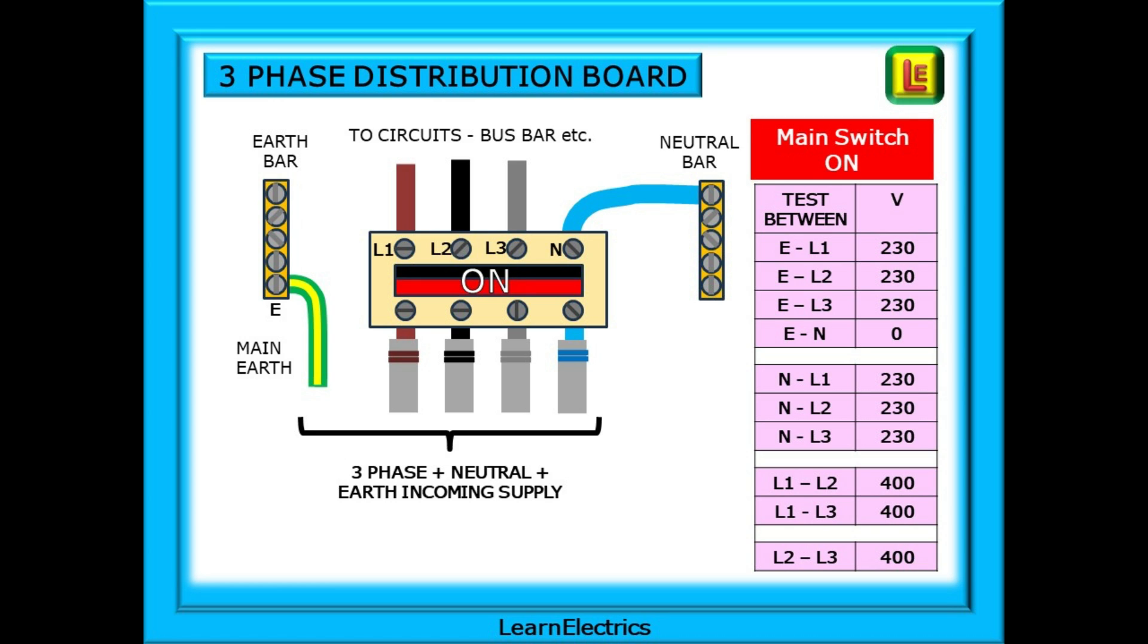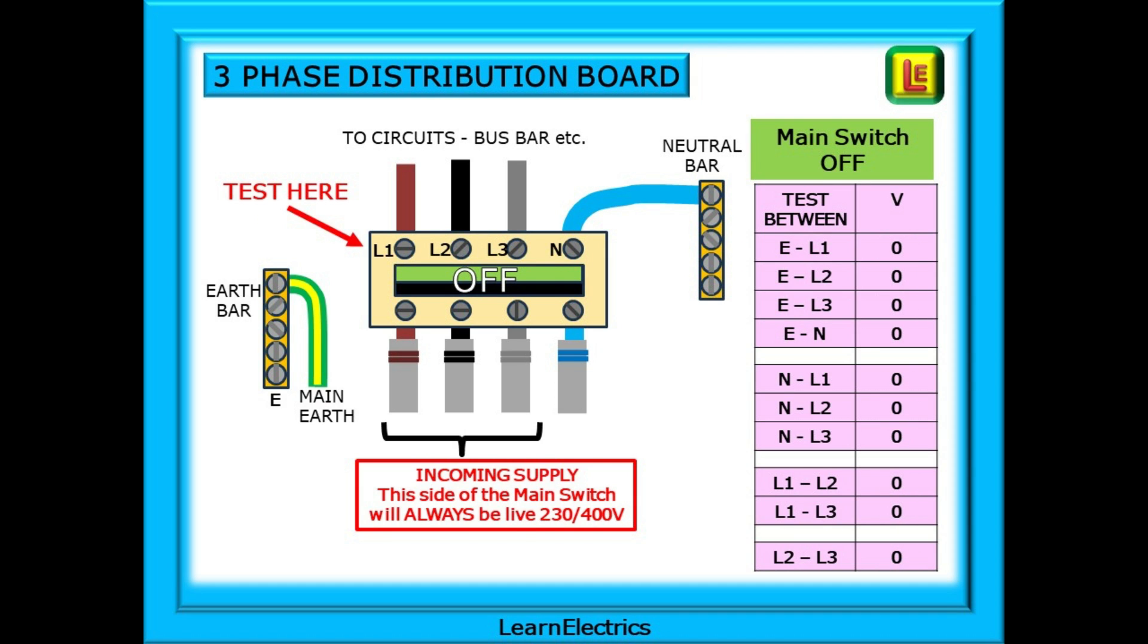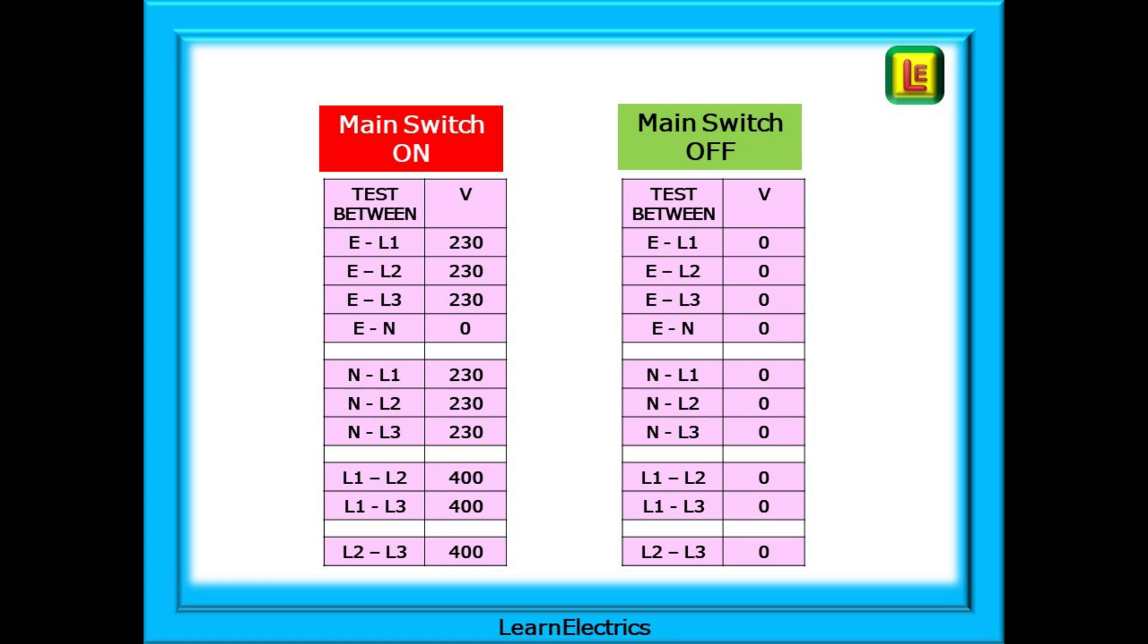If we turn the main switch off, what happens to the voltages? Remember, we are testing at the consumer side of the switch. In this drawing, we are placing our test probes in the top row of terminals plus the earth bar. With an isolated installation, all ten voltage checks will return zero volts. Make sure that you are testing on the consumer side, the switch side, of the main switch. The incoming feed or supply will always be live at 230 volts or 400 volts. A comparison of the two voltage charts side by side is given here. With the main switch off, all voltage checks will be zero volts and we can consider the installation isolated. Always remember to retest your meter for correct function after safe isolation checks. If a probe has become disconnected, you will read zero volts even on a live circuit. It does happen and you need to know. It's your safety on the line.